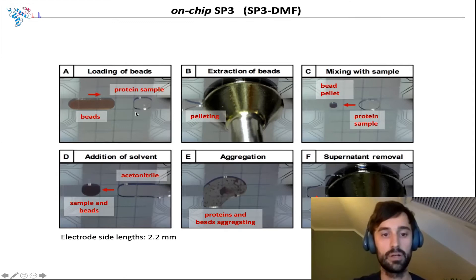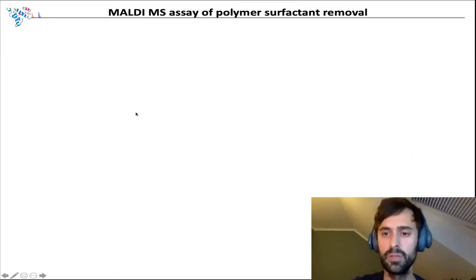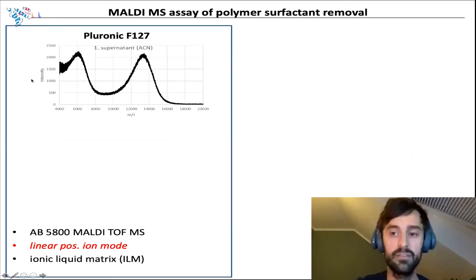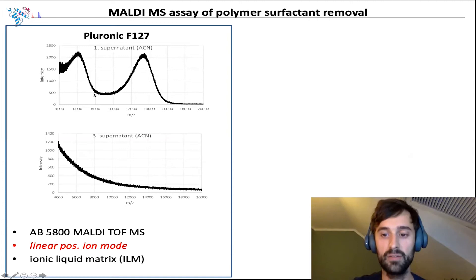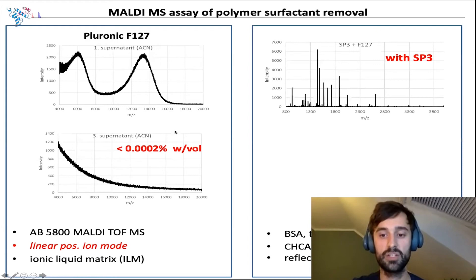Can we be certain that SP3 removes these surfactants? Yes, we can. We can measure them in the organic supernatant of the SP3 by MALDI-MS. What you see here is a characteristic mass distribution of Pluronic F127, which can be derived from the first SP3 step. When we measure the supernatant of the last SP3 rinsing step, we don't detect any polymer anymore, and we have quite low LODs for this polymer surfactant. If we now compare a digest of BSA that remained on the beads, we get a nice clean peptide mass spectrum, whereas without SP3 we saw quite strong ion suppression by this surfactant.